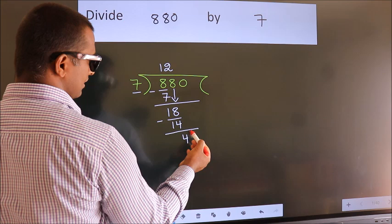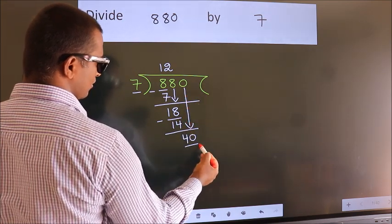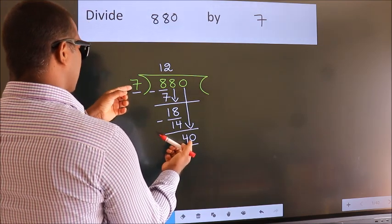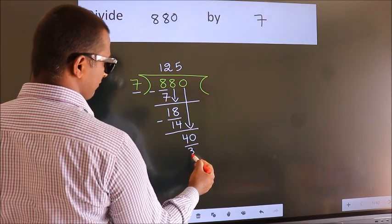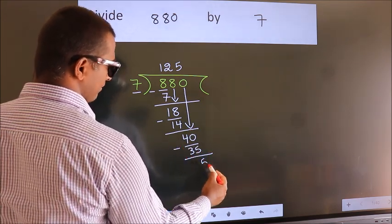After this, bring down the beside number. So, 0 down. So, 40. A number close to 40 in the 7 table is 7 fives, 35. Now we subtract and get 5.